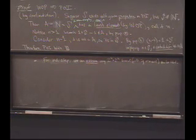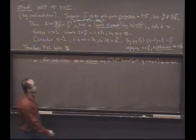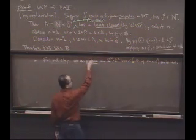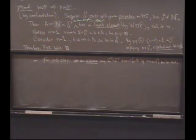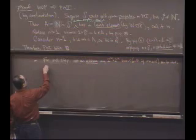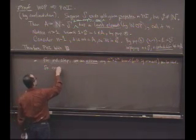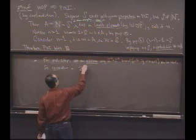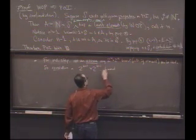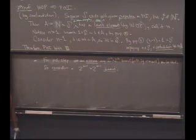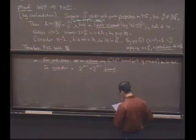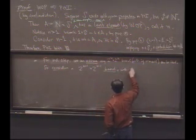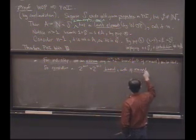A 2 to the K plus 1 by 2 to the K plus 1 board. Very, very important distinction. Many of you, I know, are tempted to start with a 2 to the K by 2 to the K board, because that's part of what you're assuming you know is true. But what the problem is asking you to show is that the statement is true for any 2 to the K plus 1 times 2 to the K plus 1 board. So you have to start with that.